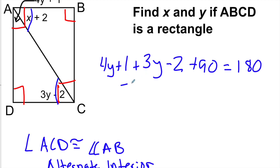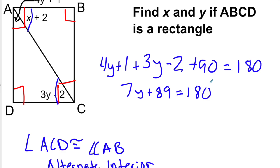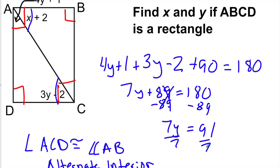So I have 7Y + 89 = 180. Subtracting 89 from both sides gives 7Y = 91. Dividing both sides by 7 — you'd do this on a calculator — and Y equals 13.